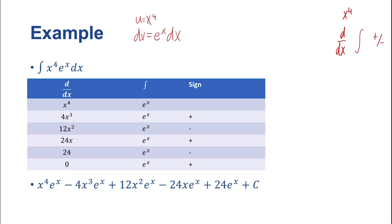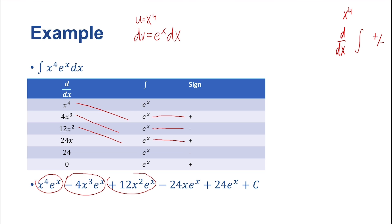First we multiply x^4 by e^x by a positive sign, giving us x^4·e^x. Then we take 4x^3, multiply by e^x and a negative sign, giving us −4x^3·e^x. Then 12x^2 times e^x times positive gives us +12x^2·e^x. Then 24x times e^x times negative gives us −24x·e^x. Then 24 times e^x times positive gives us +24e^x. And 0 times e^x is 0, so we discard that. That's a successful integration — five terms that would have taken a very long time otherwise. We're glad to have the tabular method.